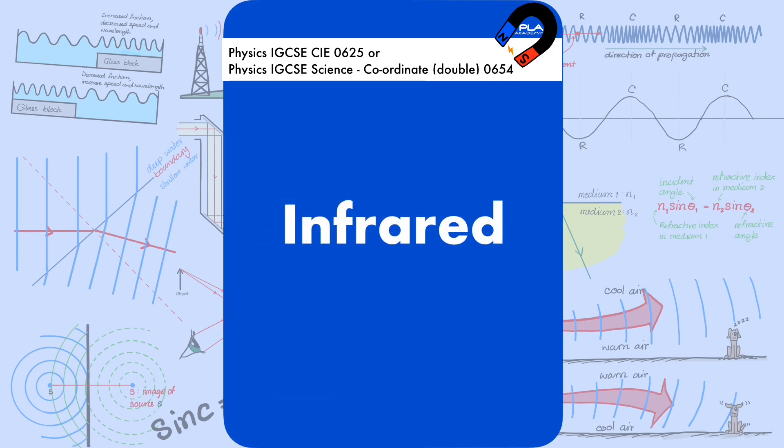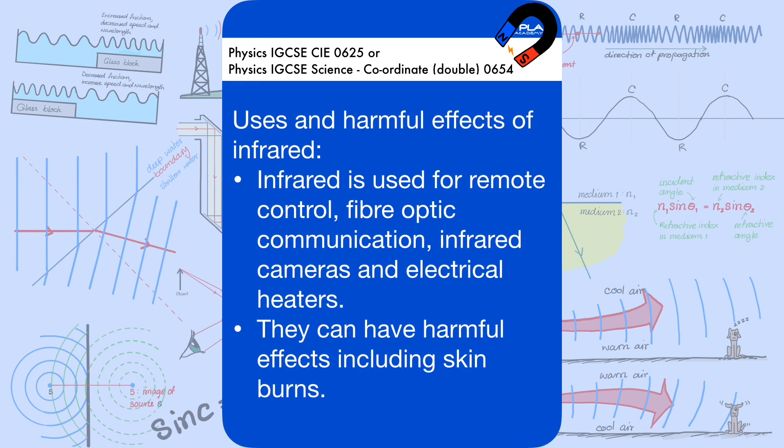Infrared is used for remote control, fiber optic communication, infrared cameras, and electrical heaters. It can have harmful effects including skin burns.